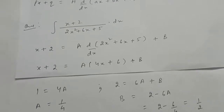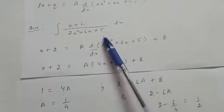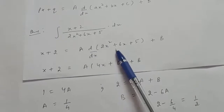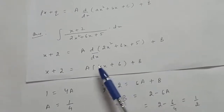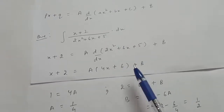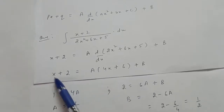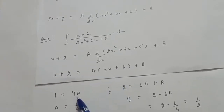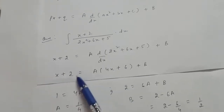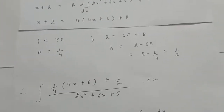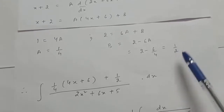For the example integral (x + 2)/(2x² + 6x + 5) dx, write x + 2 as A times (4x + 6) plus B. Comparing coefficients of x: 1 equals 4A, so A equals 1/4. Comparing constant terms: 2 equals 6A + B, giving B equals 1/2.